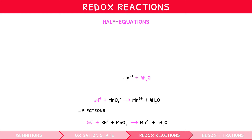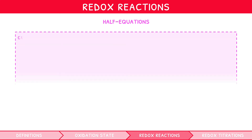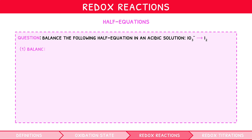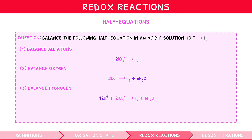This is a very common process in the exam, so it's worth recapping with another example. Balance the following half equation in acidic solution: IO₃⁻ → I₂. First, balance all atoms except hydrogen and oxygen — double IO₃⁻ to balance iodine. Second, balance the oxygens by adding 6H₂O to the right side. Third, balance the hydrogens by adding 12H⁺ to the left side. And finally, balance the charge by adding 10 electrons to the left side, since there is a charge of 10+ on the left and 0 on the right.